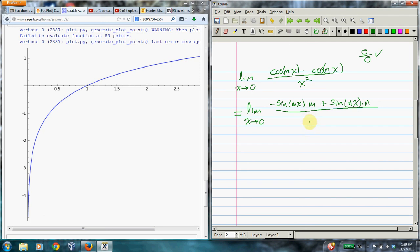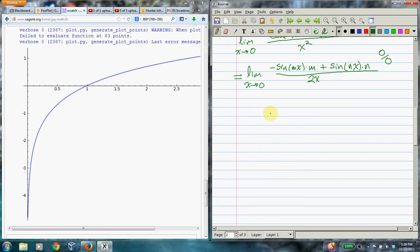Now what happens to the bottom when you take the derivative? You get 2x, okay. And can we plug in yet? So what happens if we plug in here? We get both of these on top are 0, and the bottom is also 0. So actually it's still indeterminate, so that means we need to use L'Hopital's Rule again.